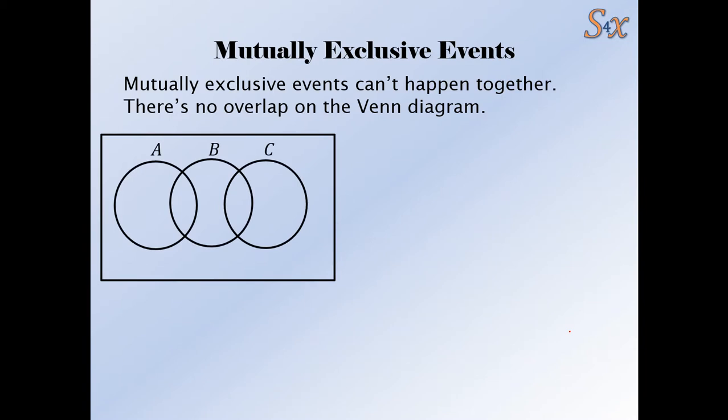So let's have a look at this one as an example. Which events are mutually exclusive? Well, A and B can happen together. They've got an overlap here. B and C can also happen together. There's an overlap here. But A and C can't happen together. There's no overlap in the Venn diagram. So A and C are mutually exclusive.